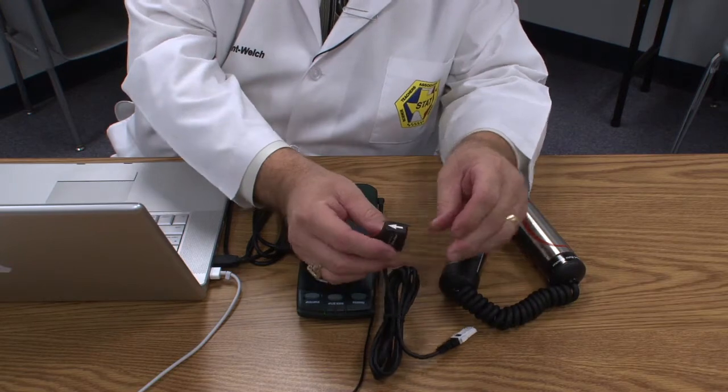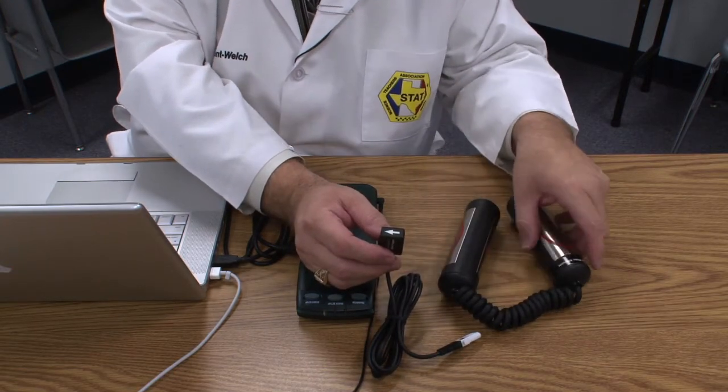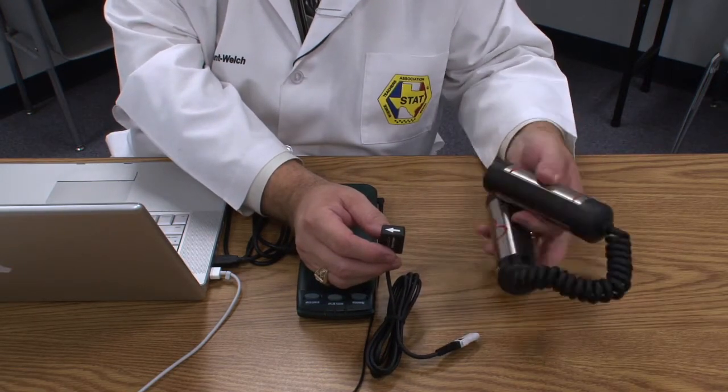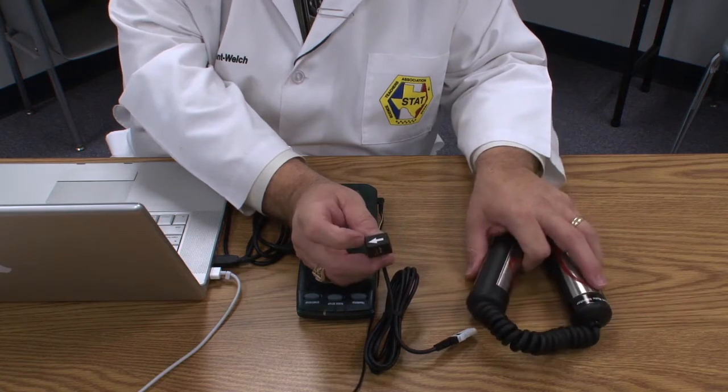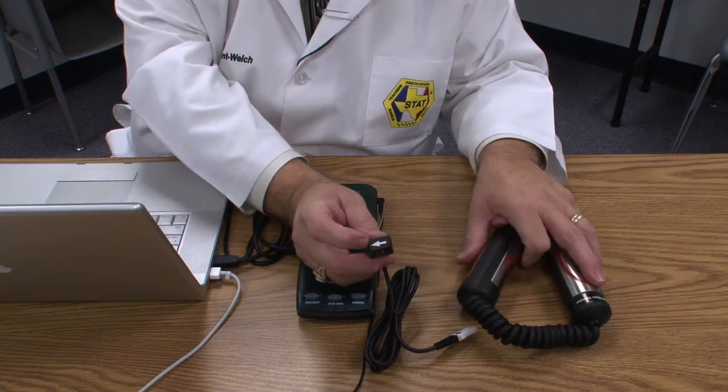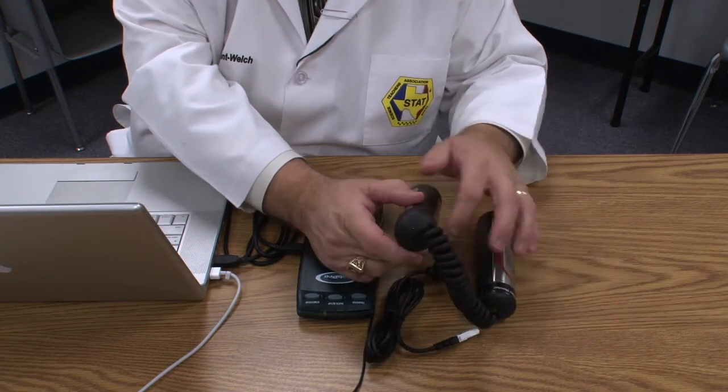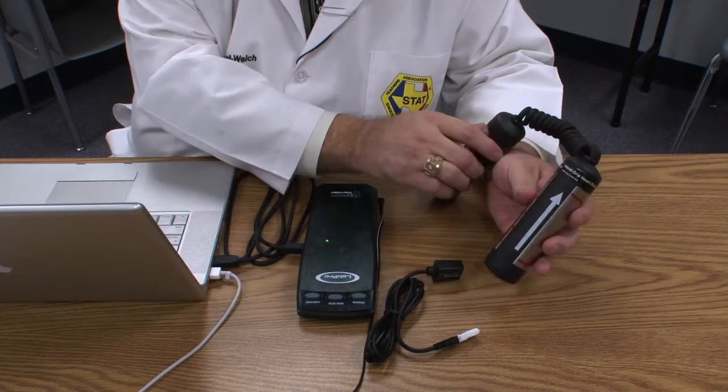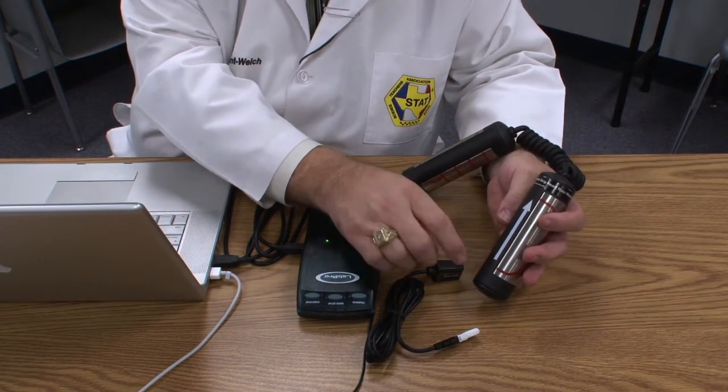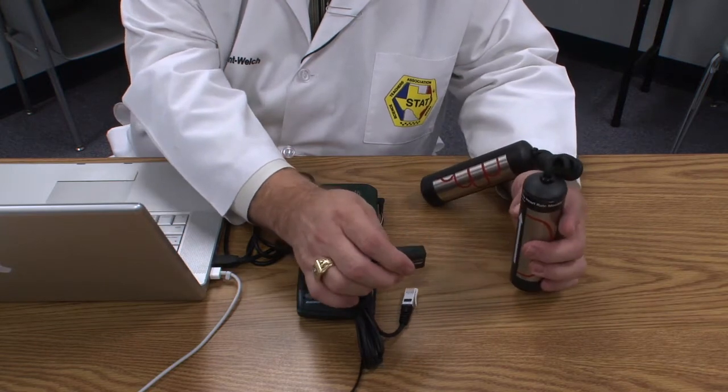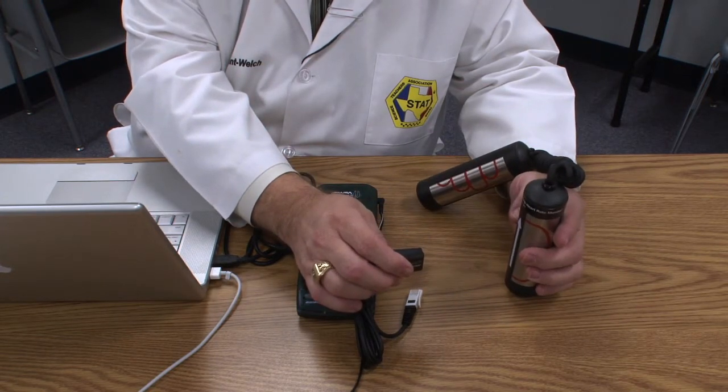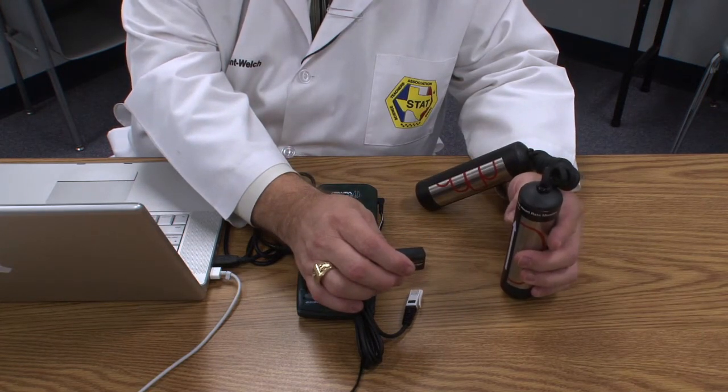If you have this probe, you'll notice there's a white arrow on the sensor and on the left-hand controller. This white arrow must be lined up with that white arrow for it to pick up a signal.